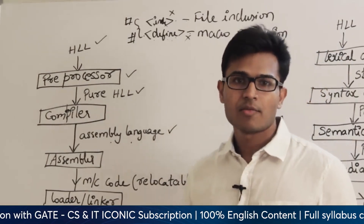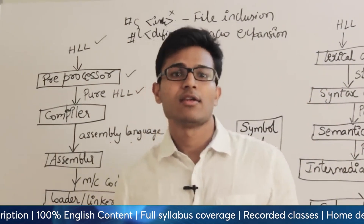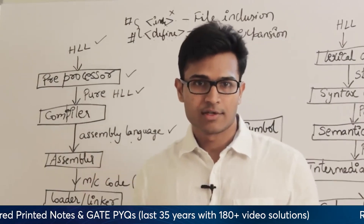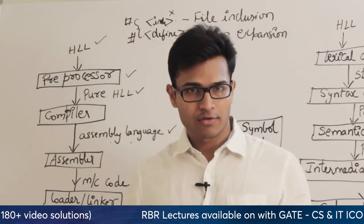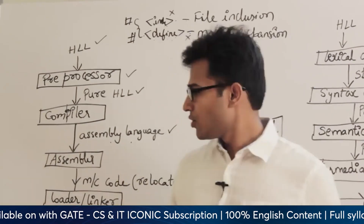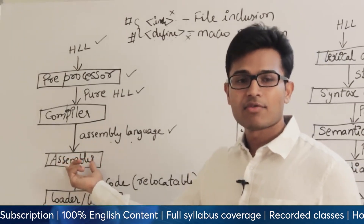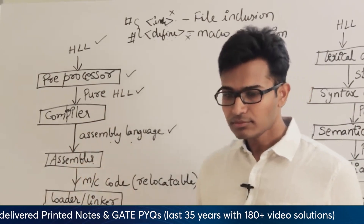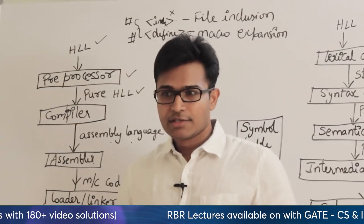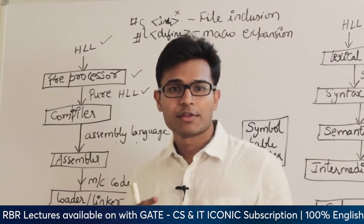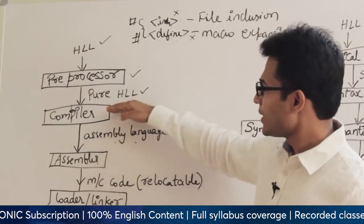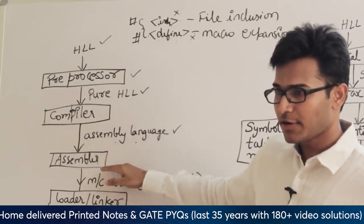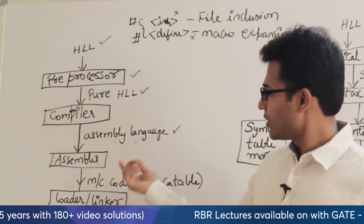For every platform — by platform I mean the hardware you are using, for example Intel, AMD, or Motorola — combined with the operating system such as Linux or Windows, 32-bit or 64-bit, we are going to have some assemblers. An assembler for one platform will not work for another platform. The main purpose of the compiler is to generate assembly-level language, which is not entirely in zeros and ones and not entirely in high-level language — it is somewhat intermediate.